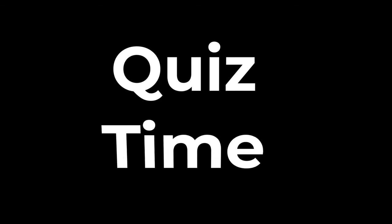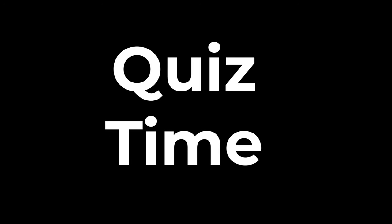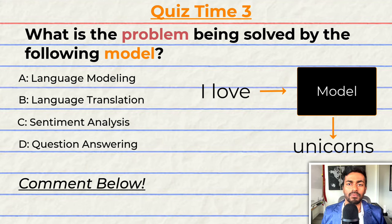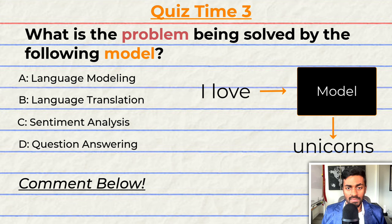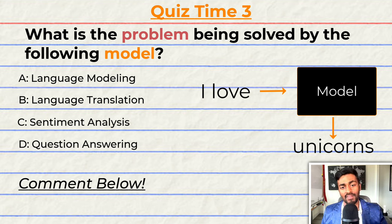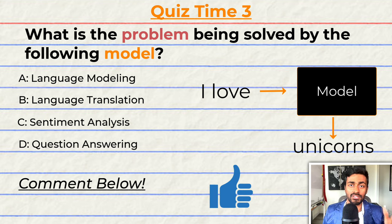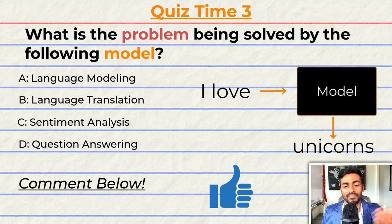Quiz time! This is going to be a fun one. What is the problem being solved by the following model? A: Language modeling. B: Language translation. C: Sentiment analysis. Or D: Question answering. Comment your answer down below and let's have a discussion. And if you think I deserve it, please do give this video a like. That's going to do it for quiz time and part three of the explanation.